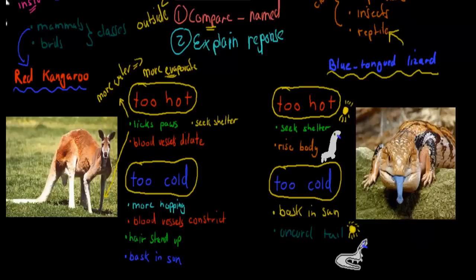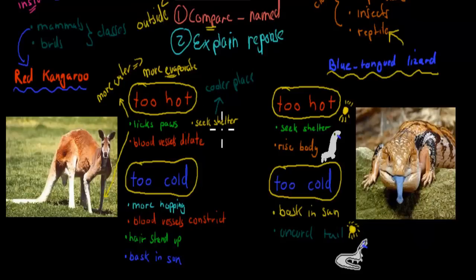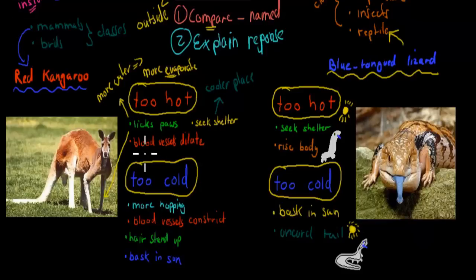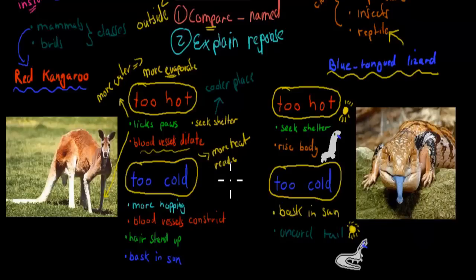The red kangaroo can also seek shelter — hiding away from the sun. Going to a cooler place means its internal temperature will decrease as well. Another response is that its blood vessels dilate, meaning more heat reaches the limbs and more heat is lost to the surroundings. These are the three responses the red kangaroo has when it's too hot: lick paws, seek shelter, and blood vessel dilation.